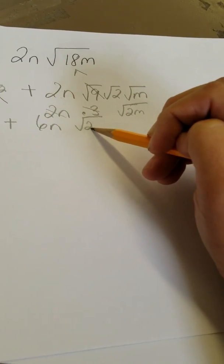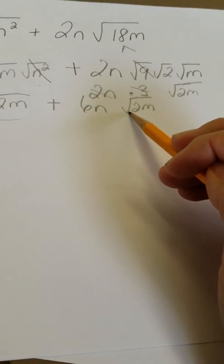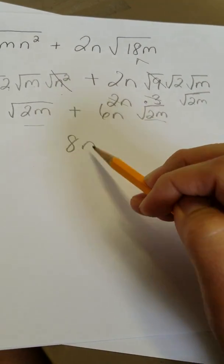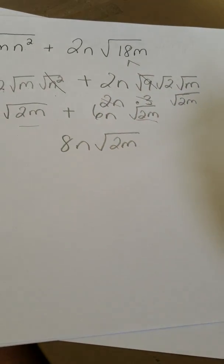So 2N times 3 is 6N. Radical 2M. Oh, that's great. 2M is inside both. That makes me happy. 8N radical 2M. Done.